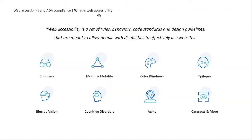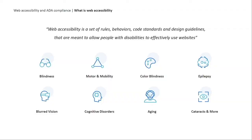To get right into it, web accessibility is ultimately a set of rules, behaviors, code standards and design guidelines that were created by the W3C and they're called the WCAG 2.1. The WCAG 2.1 is a massive 1,000-page guidebook that encapsulates a range of disabilities that go from hindering internet use to making internet use impossible without significant adjustments.